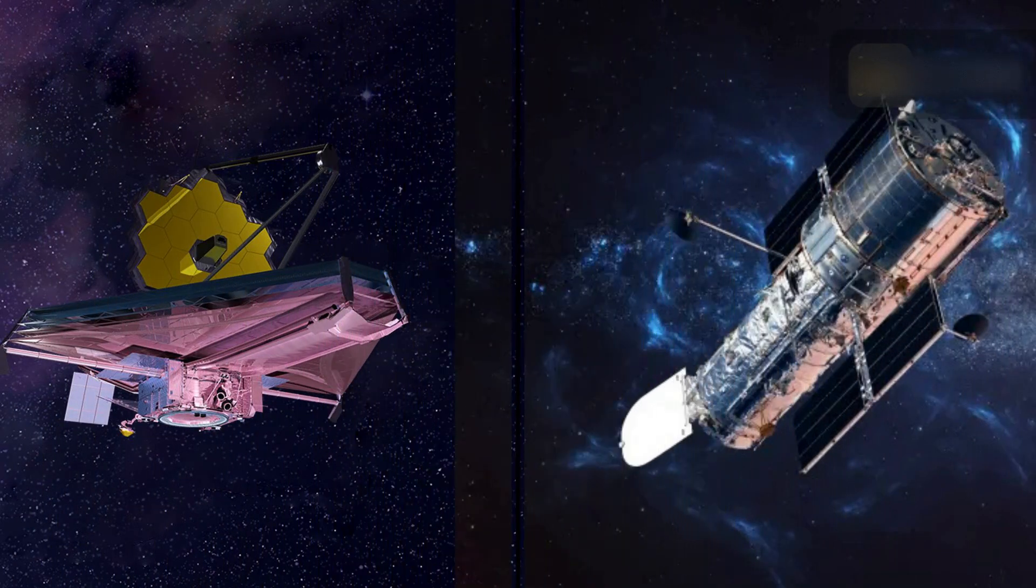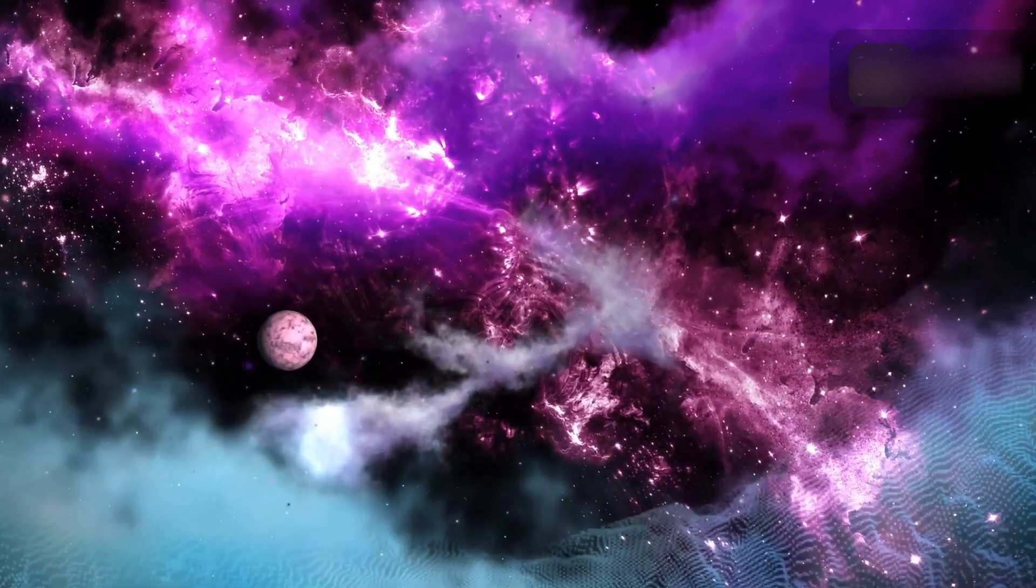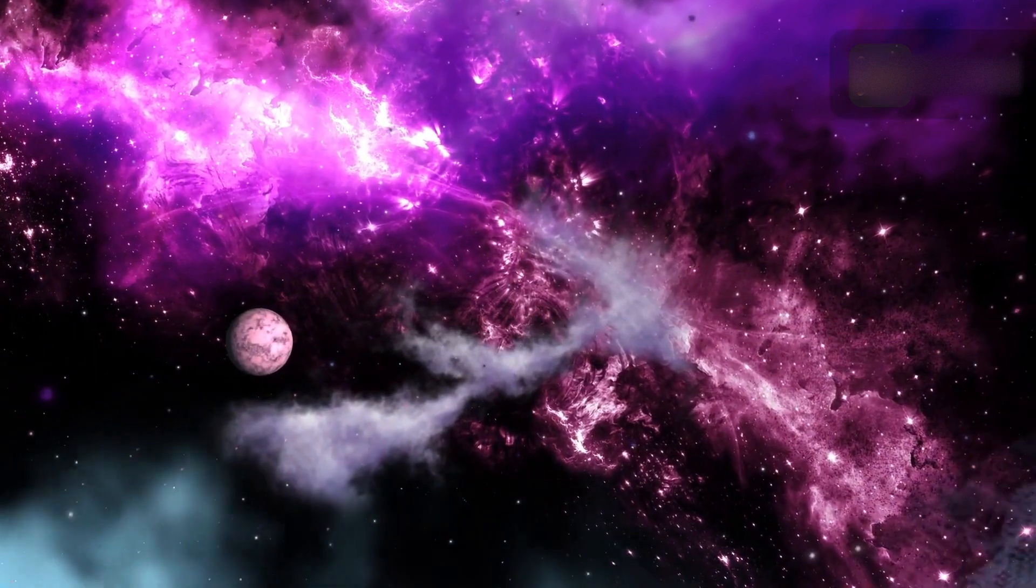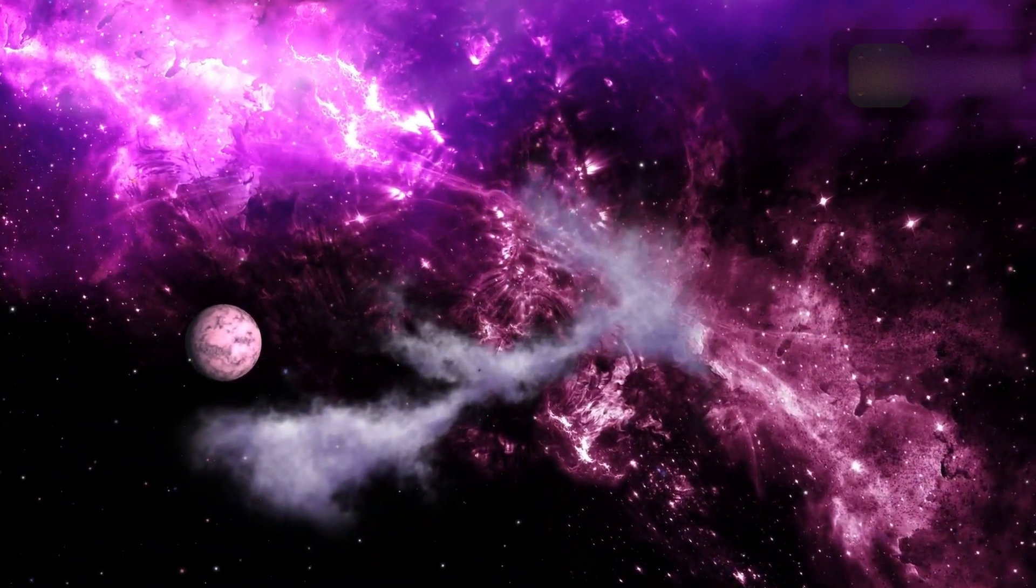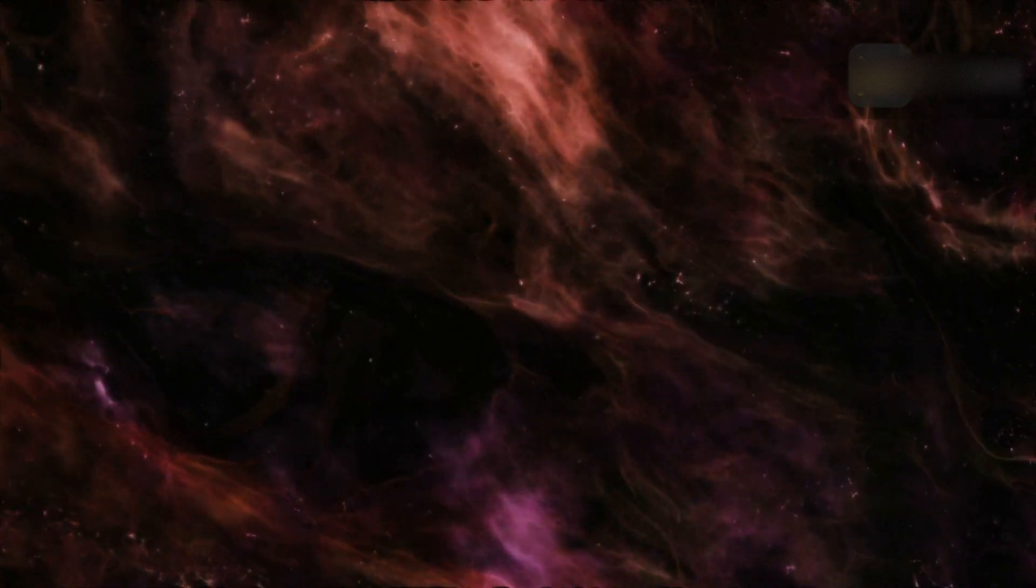Why? Webb's observations combine near and mid-infrared light and Hubble's showcase visible light. Dust absorbs ultraviolet and visible light and then re-emits it in the infrared. In Webb's images, we see dust glowing in infrared light. In Hubble's images, dark regions are where starlight is absorbed by dust.